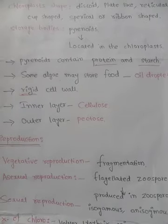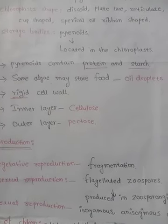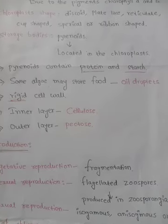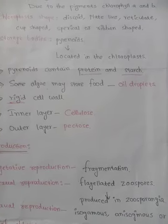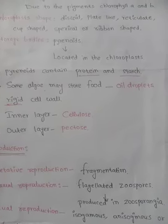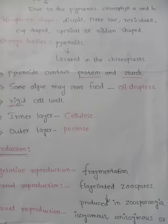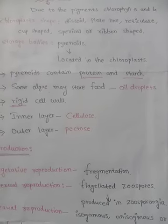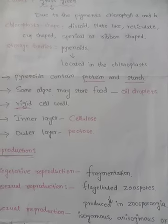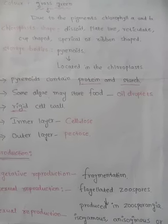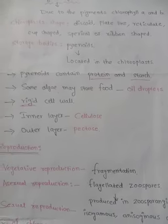Asexual reproduction takes place by flagellated zoospores. These zoospores have flagella, so the zoospores move with the help of flagella. The zoospores are produced in the zoosporangia.